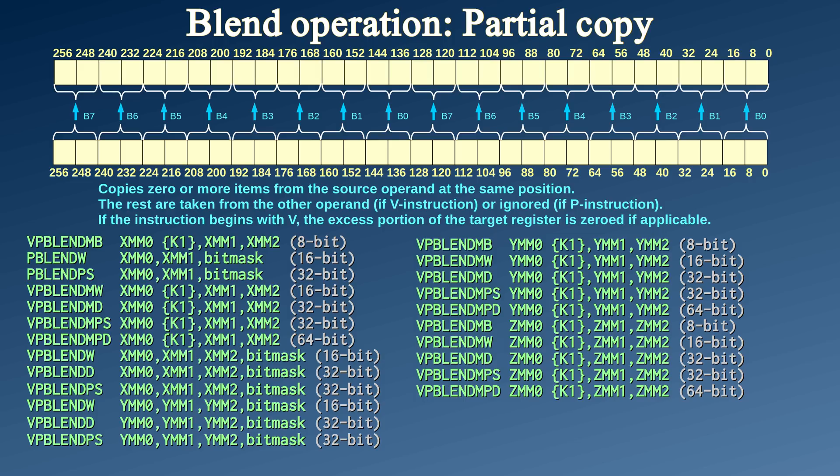The BLEND family of instructions work like sieves. You have 8-bit sieves, 16-bit sieves, 32-bit sieves, and 64-bit sieves. In each of these, you supply a bitmask — which portions of the target register are copied from the same section in the source register, and which portions are left intact. Some of these instructions take the bitmask as an immediate parameter, and some of them take the bitmask in another vector register.